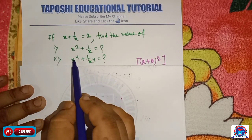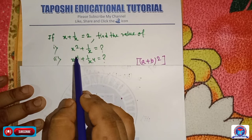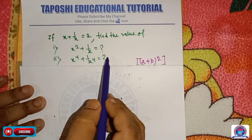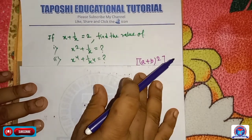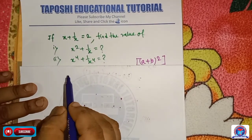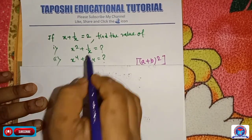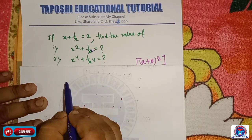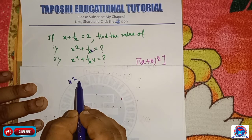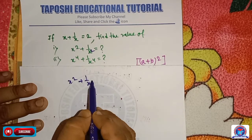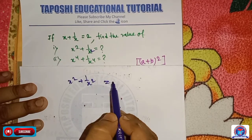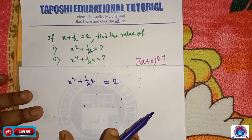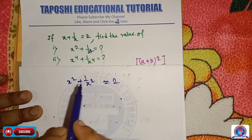Now we find out x to the power 4 plus 1 by x to the power 4. We already calculated that x square plus 1 by x square is equal to 2. Now we square both sides again.